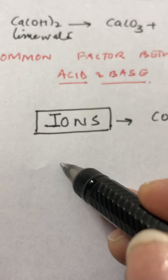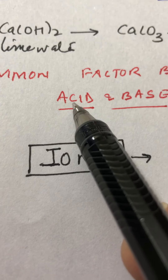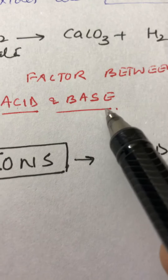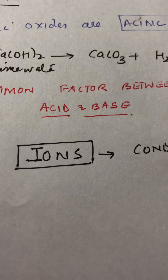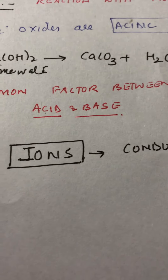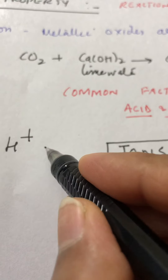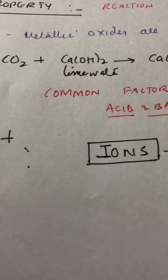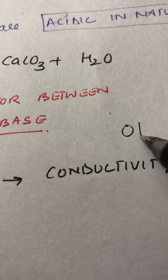By definition, an acid is a substance which, on dissolving in water, ionizes and liberates hydrogen ions. A base is a substance which, on dissolving in water, ionizes and liberates hydroxide ions. So in all acidic solutions, the hydrogen ion (H⁺) is the common ion, while the other anion could be chloride, sulfate, nitrate, carbonate, or any other anion.